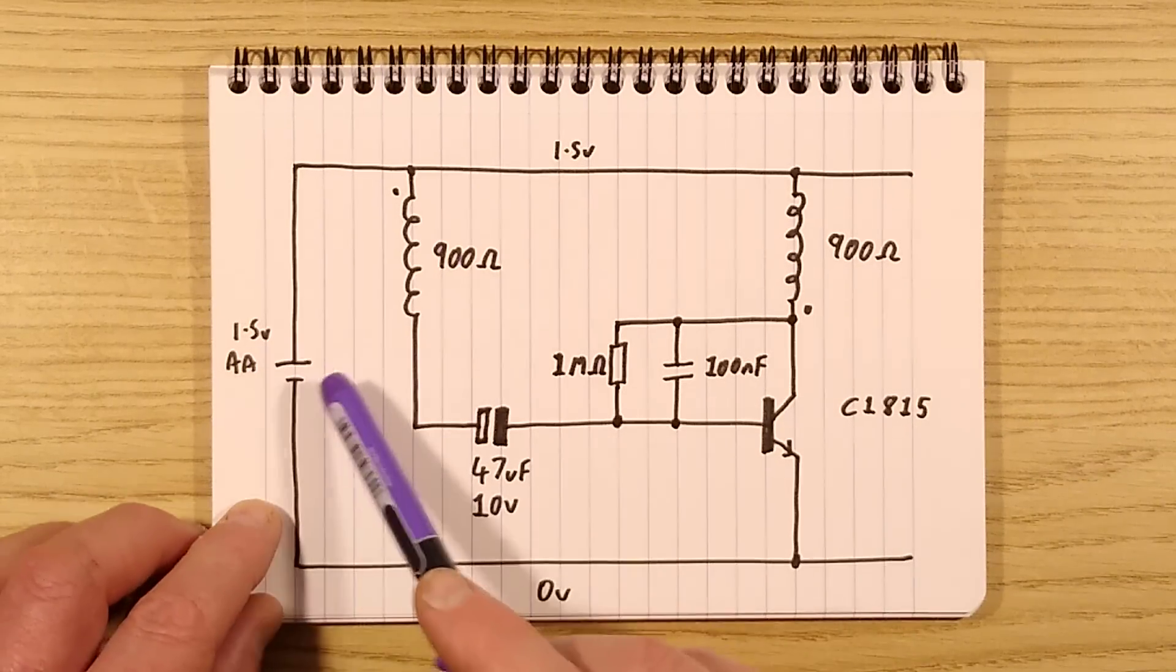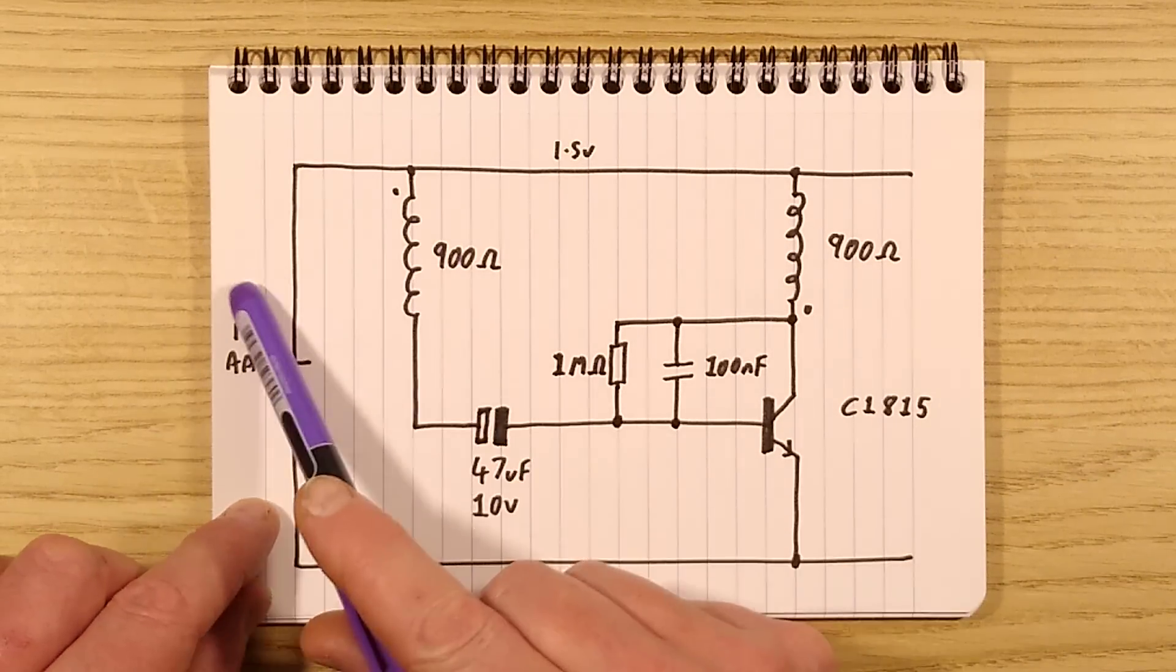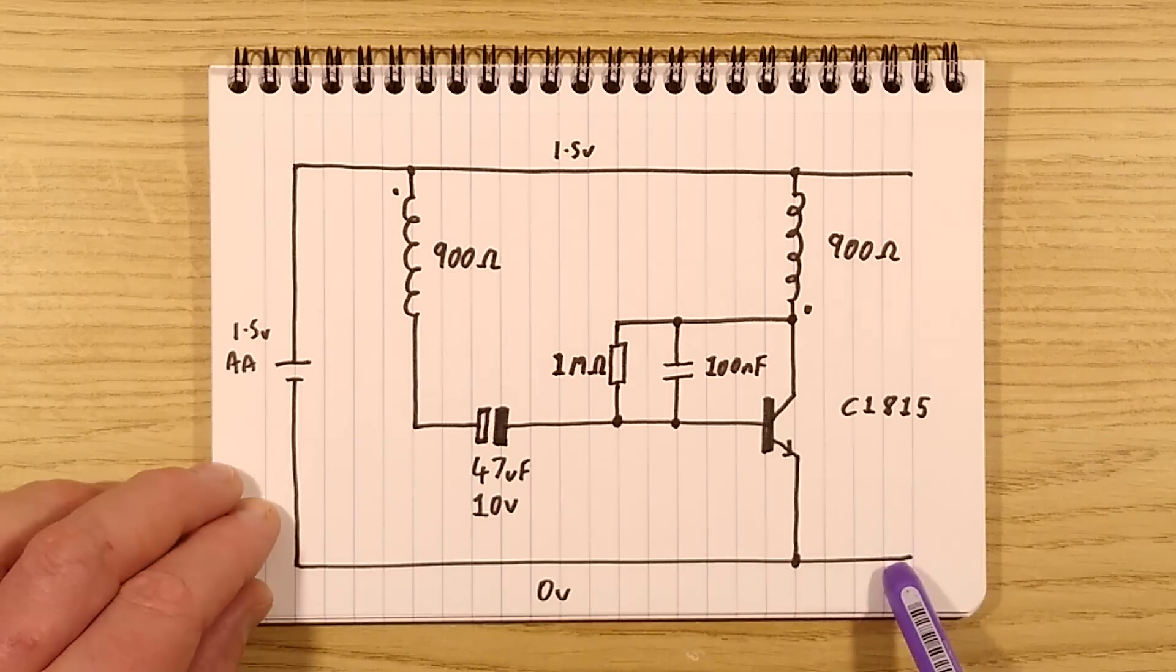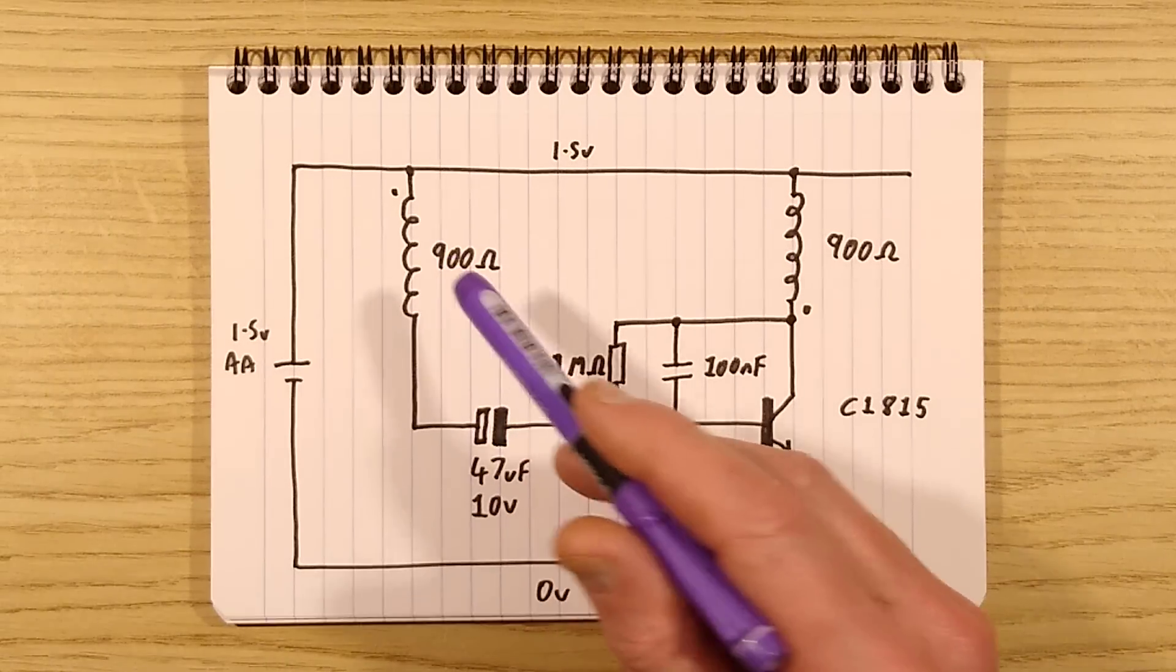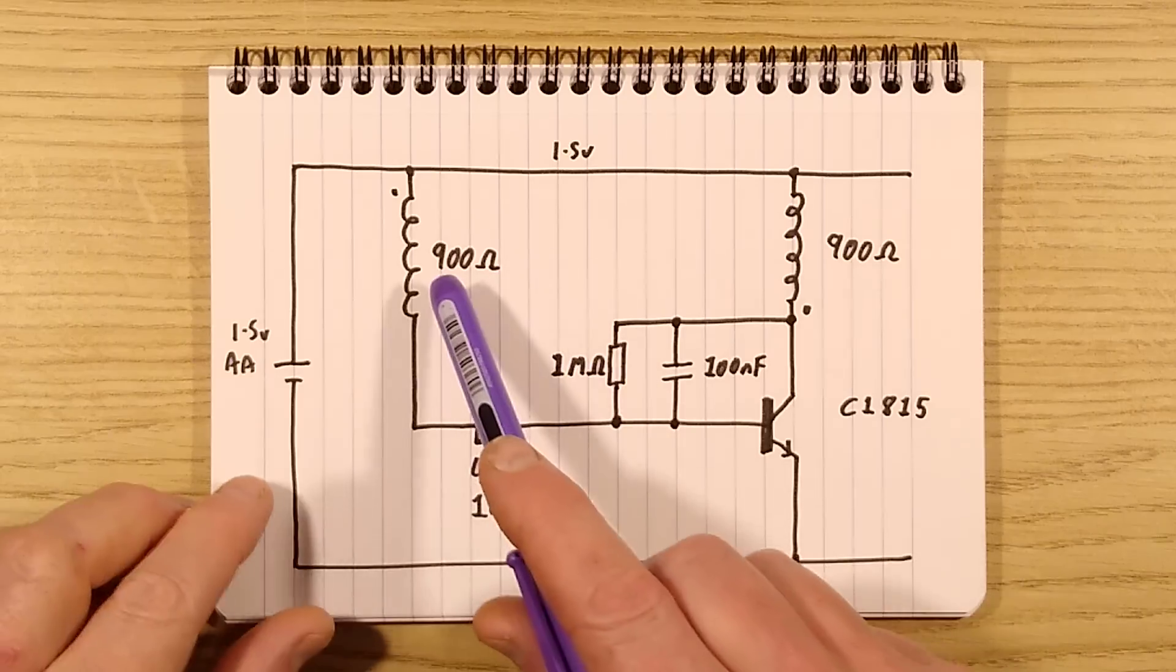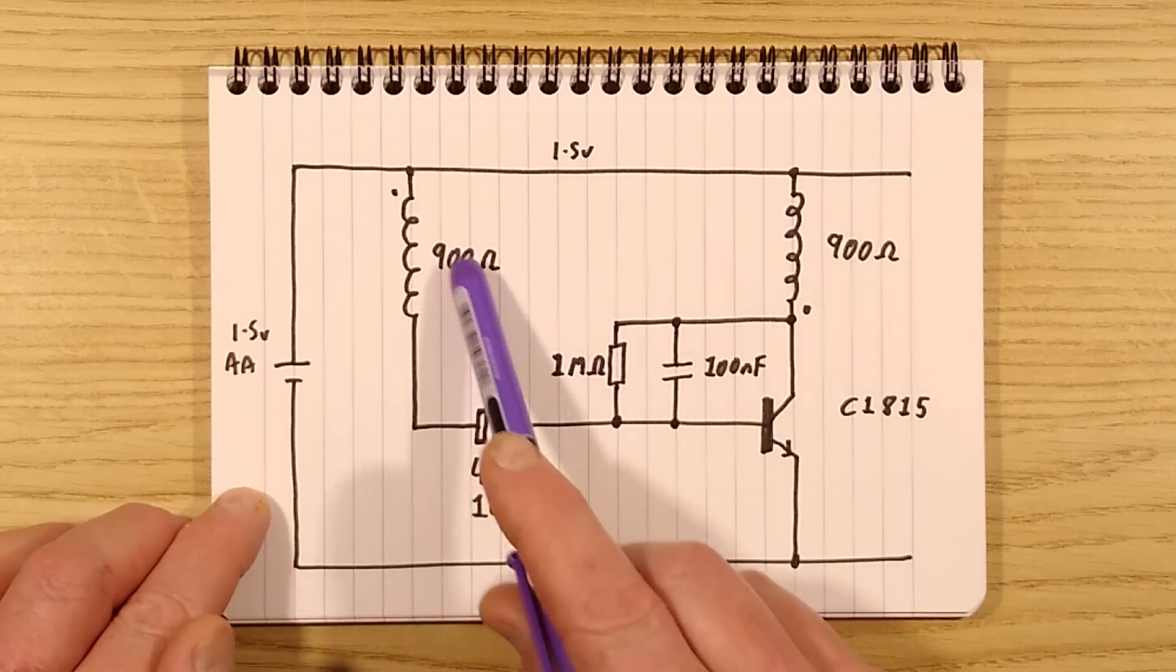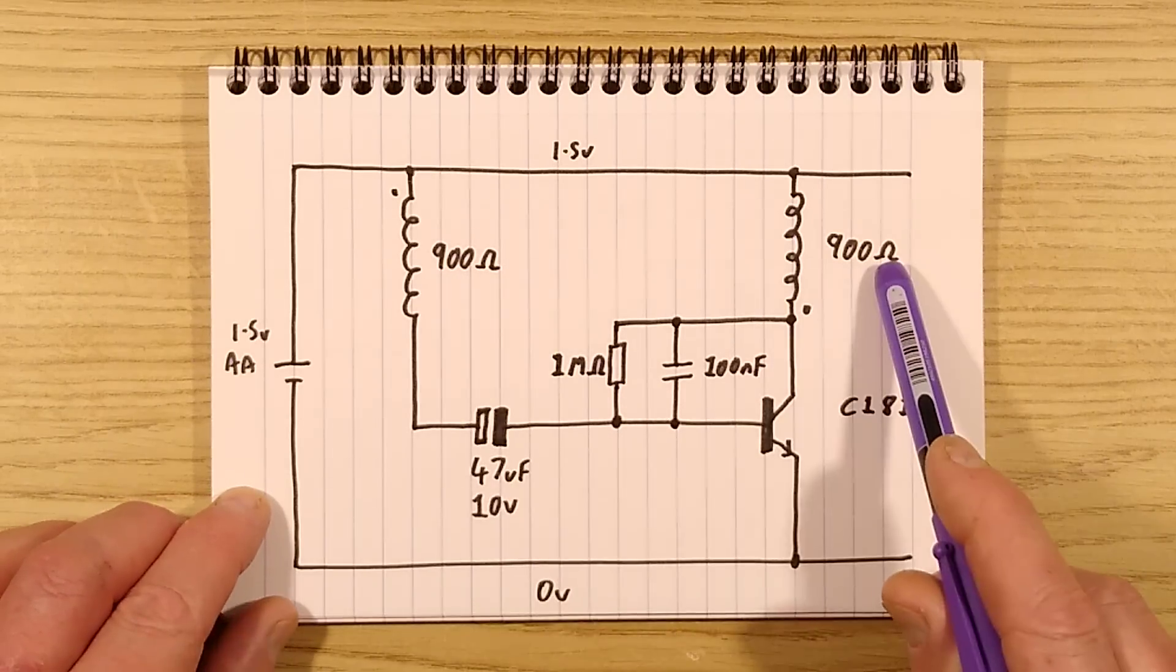Here is the AA battery that is powering both the clock mechanism and also this pendulum section. The coil has two windings. It's got a center tap winding effectively with 900 ohms on either side.